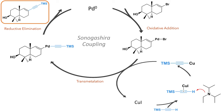With the vinyl bromide in hand, the authors then progressed to a Sonogashira coupling to install the alkyne. This starts with a palladium(0) catalyst which undergoes oxidative addition into the carbon-bromine bond. This then undergoes transmetalation with a copper-alkyne complex, which is generated by the reaction of copper iodide and the alkyne precursor in the presence of base. This transmetalation process generates a palladium complex which, upon reductive elimination, produces the desired alkyne-containing product.